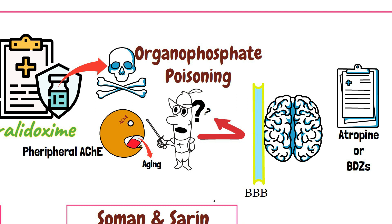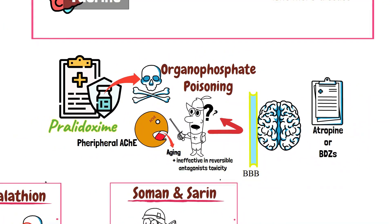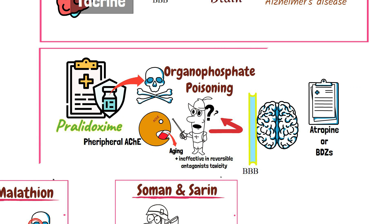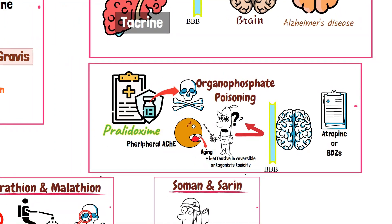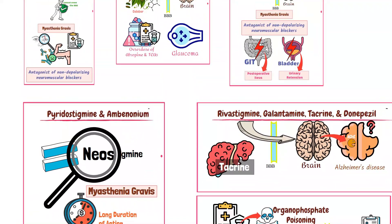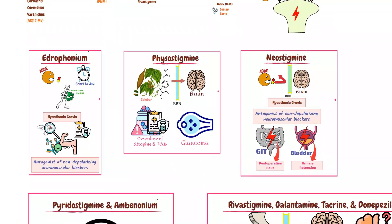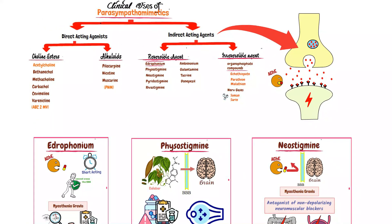Furthermore, pralidoxime is ineffective in reversible agonist toxicity, for example physostigmine and neostigmine. If you want us to make a video on organophosphate poisoning and its clinical management, please tell us in the comment section. Please share this video with your friends and support us by subscribing to our channel.